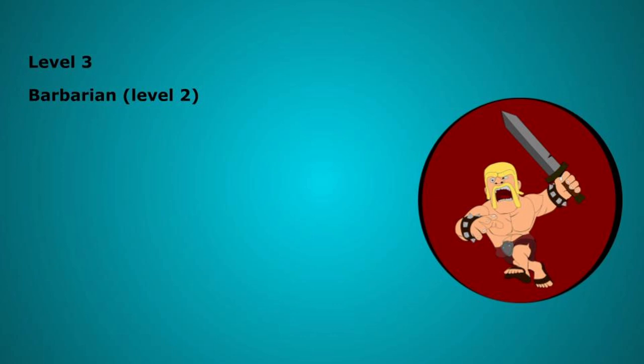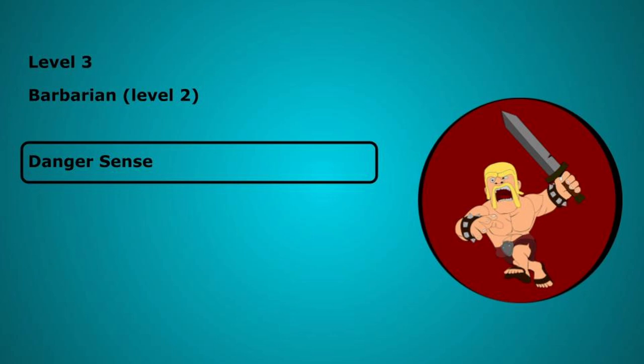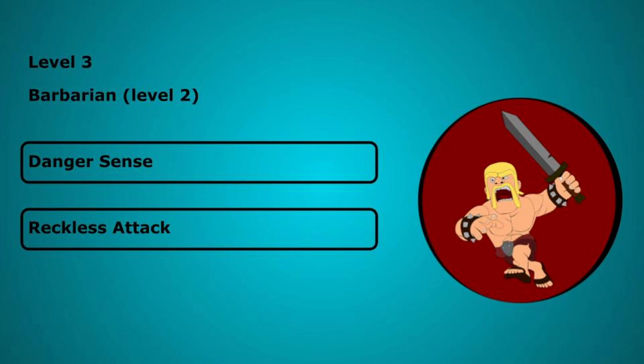Level 3 we take our second level in Barbarian. We get the feature danger sense which gives us advantage on dexterity saving throws against effects you can see such as traps and spells. And we also get the reckless attack feature, which lets you make all melee weapon attacks using strength on that turn with advantage. The trade off is that attack rolls against you have advantage until your next turn.